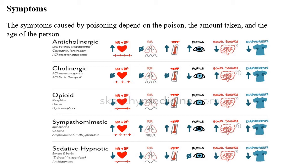The symptoms caused by a poison depend on the poison, the amount taken, and the age of the person. For anticholinergic drugs, symptoms include increased heart rate, no effect on respiration rate, increased temperature, increased pupil size, decreased bowel movement, and decreased sweating. In contrast, cholinergic poisoning shows no effect on heart rate, respiratory rate, or temperature, but decreased pupil size, increased bowel movement, and increased sweating.